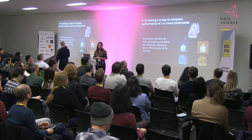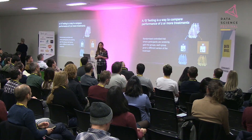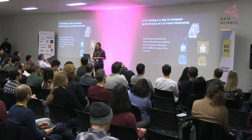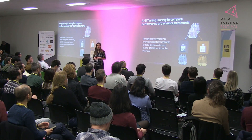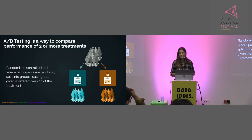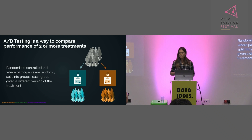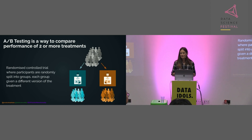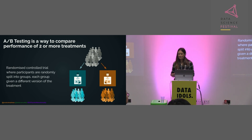A/B testing is essentially a randomized controlled trial where participants are randomly split into groups, each given a different version of a treatment. This gives us a way to compare the performance of two or more treatments. In a medical setting, for example, we might give one group a placebo and one group a new drug. In terms of an app, we might show one group of players a blue button and one group an orange button, and see the preference of the players based on this.